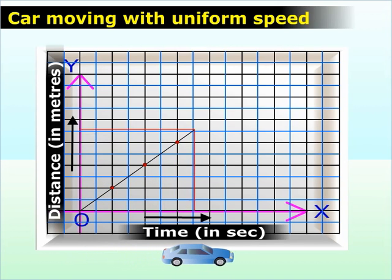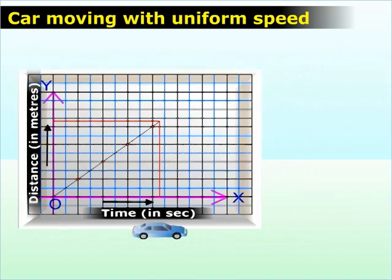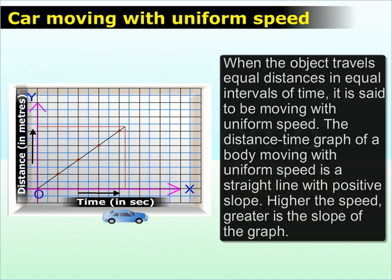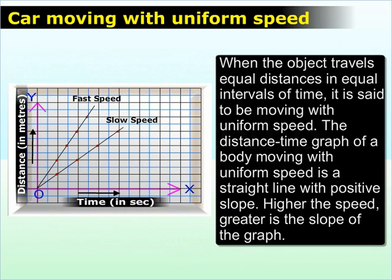A car moving with a uniform speed. An object is said to be moving with a uniform speed if it travels equal distances in equal intervals of time. The distance-time graph of an object moving with a uniform speed is a straight line with a positive slope. The higher the speed of the object, the greater the slope of the graph.